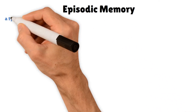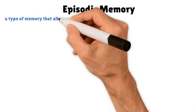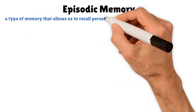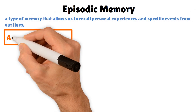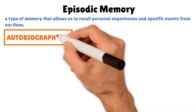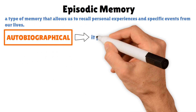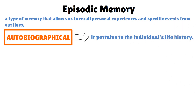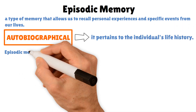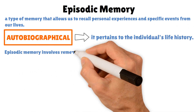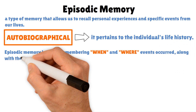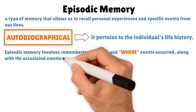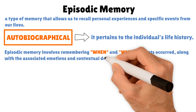Episodic memory is a type of memory that allows us to recall personal experiences and specific events from our lives. This form of memory is autobiographical, meaning it pertains to the individual's life history. Episodic memory involves remembering when and where events occurred, along with the associated emotions and contextual details.